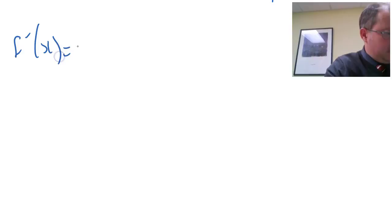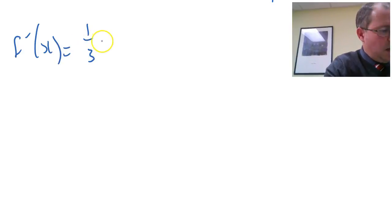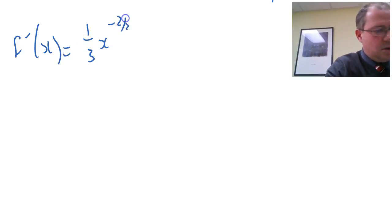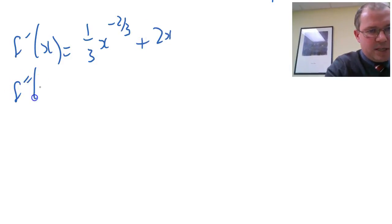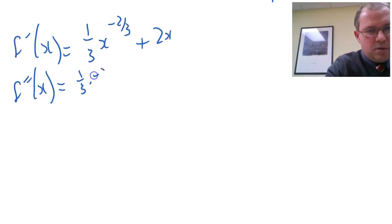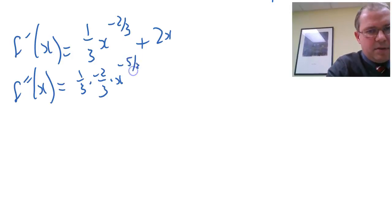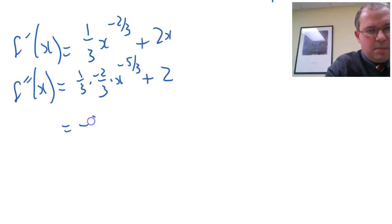Let's remind ourselves what we got for the first derivative: one third x to the minus two thirds plus two x. Let's differentiate that. We get a third, the minus two thirds comes down, knock the power off, so we get minus five thirds, plus two. That gives us minus two ninths x to the power of minus five thirds, plus two.